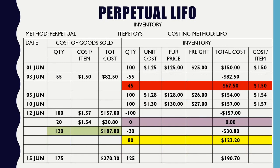Since we reached the end of the accounting period on June 15th, I sold a total of $175, but I actually have 125 units left — which was part of the scenario. I have 45 units from my very first batch of inventory and 80 units left from my second batch purchased on June 5th.